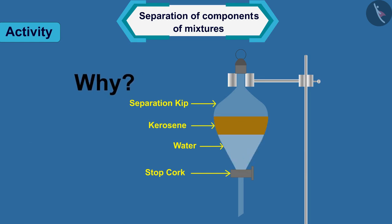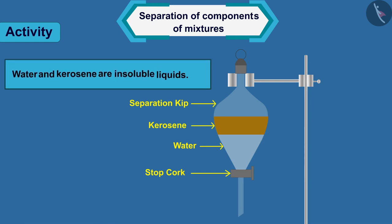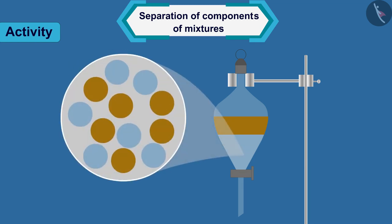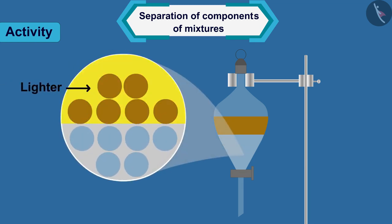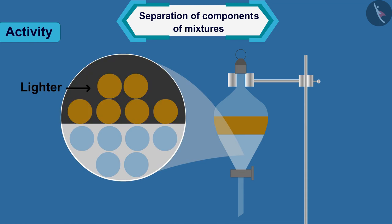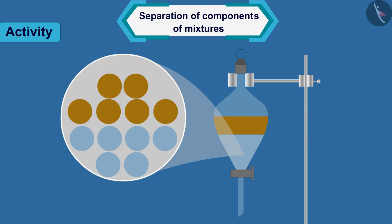But why so? This is possible because water and kerosene are insoluble liquids. Kerosene, being lighter than water, rises upwards to form a separate layer. And due to the water being heavy, it remains in the bottom layer.